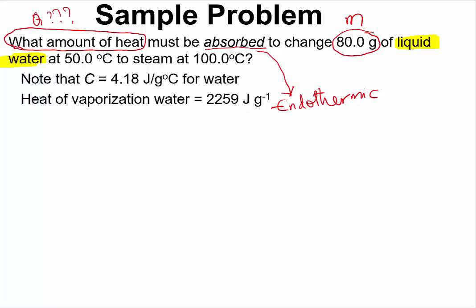At a temperature of 50.0 degrees Celsius, that is for the liquid water, to steam. So we are going from liquid water to steam and the steam we want it to be at 100.0 degrees Celsius.